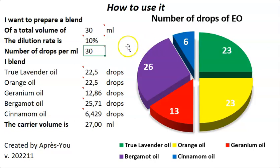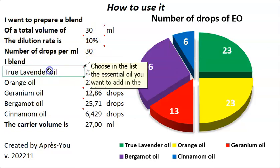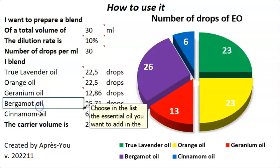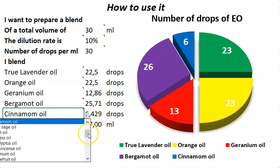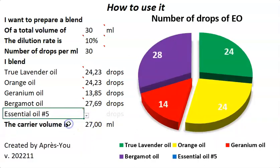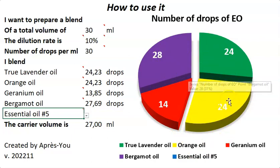You can choose your dilution, your volume, and then the oils you want to add. It's a very flexible calculator, because if you want to remove an oil — for example, finally you decide you don't want to use cinnamon — you just take it out, leave it with no drops, and then you have four essential oils. Everything has been recalculated in order for you to adjust your blending.